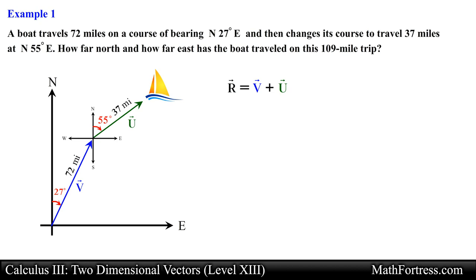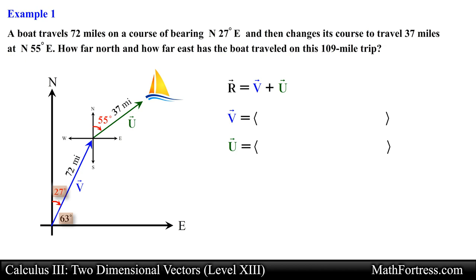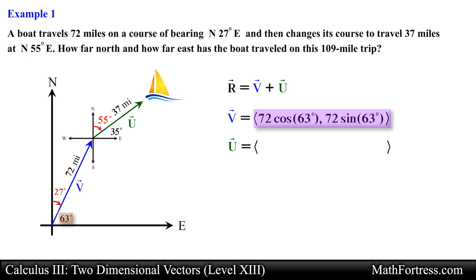Now that we have both vectors, we find the components of each vector and then add them component-wise to find the resulting vector. We can use either the 27-degree angle or the 63-degree angle to find the components of vector v, and either 55 degrees or 35 degrees for vector u. It really does not matter which angle you use, as long as you apply the trigonometric ratios correctly.